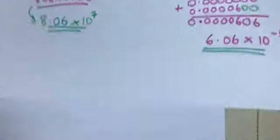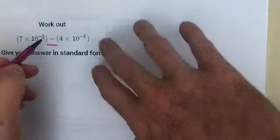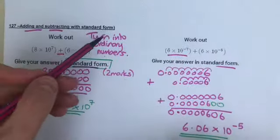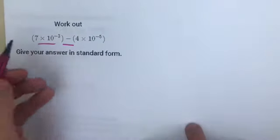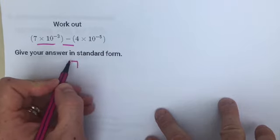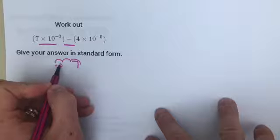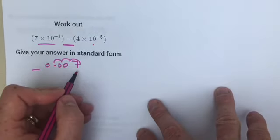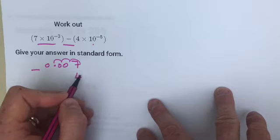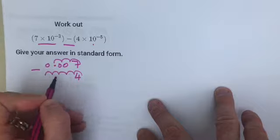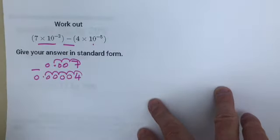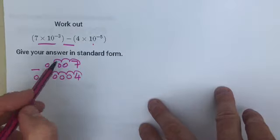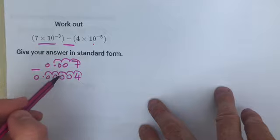Finally, negative powers with a subtraction between them - these are a little bit trickier. First thing, as before, turn into ordinary numbers. So 10 to the minus 3: decimal point there, count 1, 2, 3, two zeros at the front. Then minus this one: 4 times 10 to the minus 5, count back 1, 2, 3, 4, 5. If you're still stuck on converting to ordinary numbers, please go back and have a go at clips 122 and 123 again.